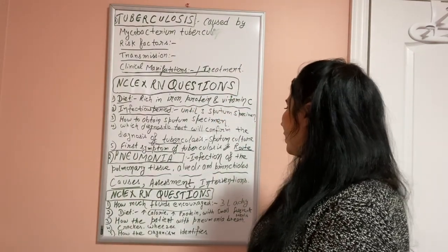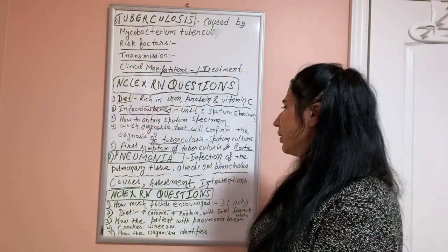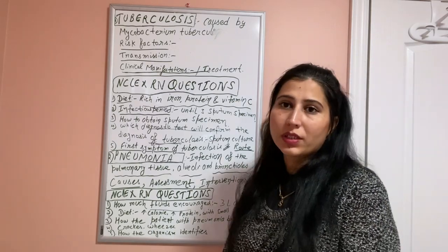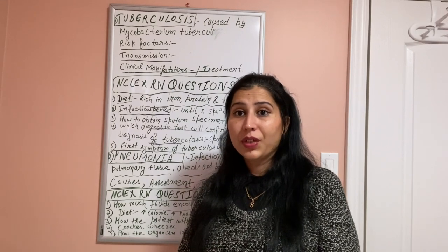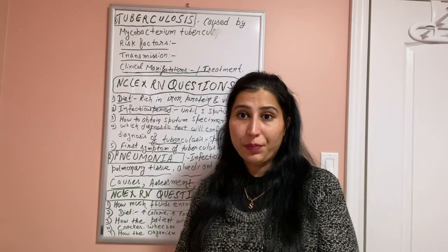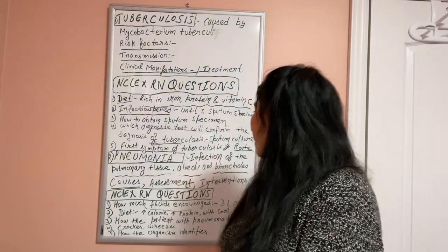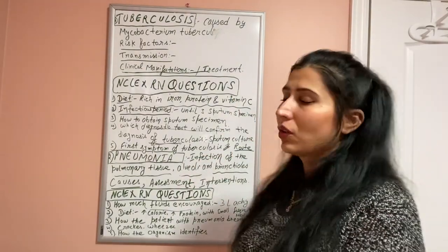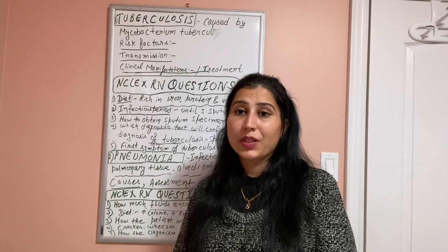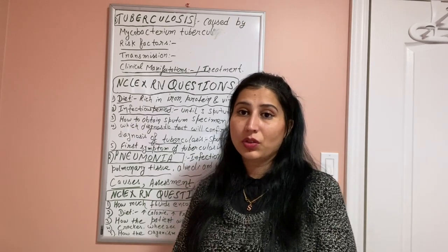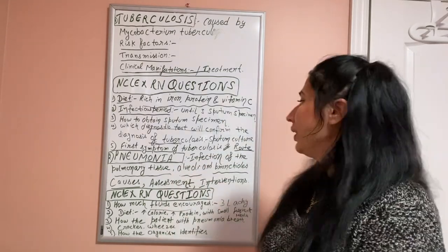The first symptom of tuberculosis is cough with mucoid sputum. The route of transmission of tuberculosis is airborne droplet nuclei, so that's why we use N95 masks — this infection spreads very highly through airborne or droplet route.